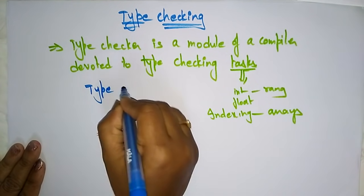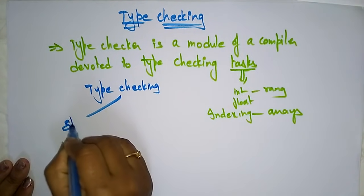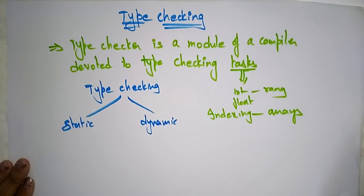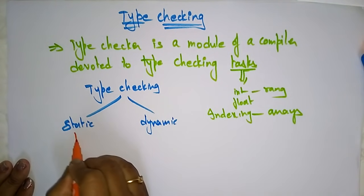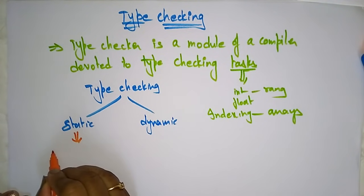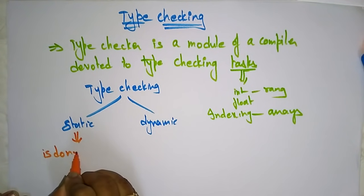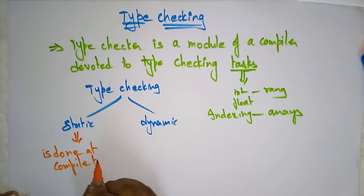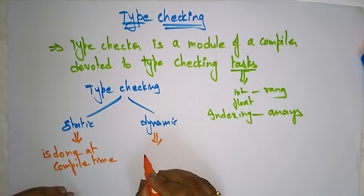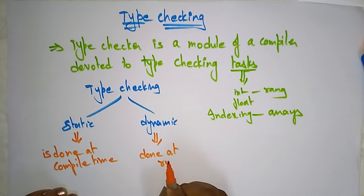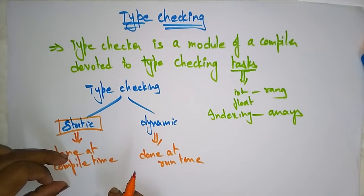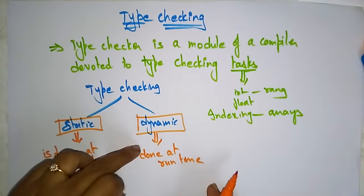Type checking may be either static or dynamic. Static type checking is done at compile time, whereas dynamic type checking is done at runtime. These are important distinctions to remember: static type checking occurs at compile time, and dynamic type checking occurs at runtime.